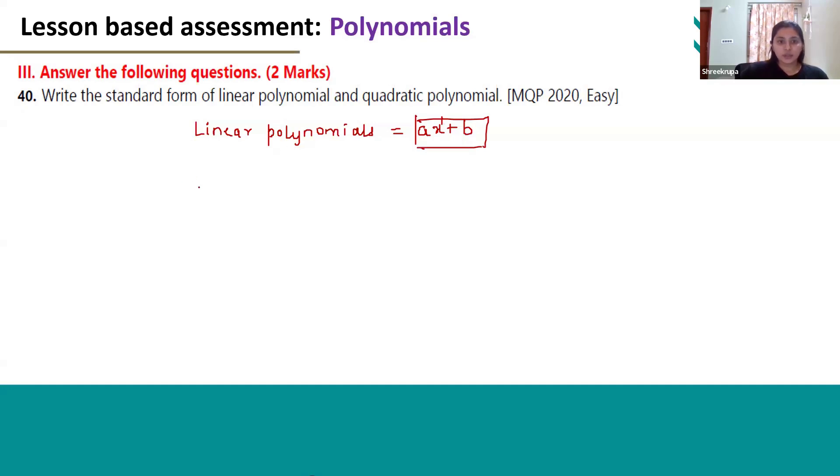In case of quadratic polynomials, the variable x, or any other variable, should have highest power 2. Only then the polynomial will be considered as quadratic polynomial.